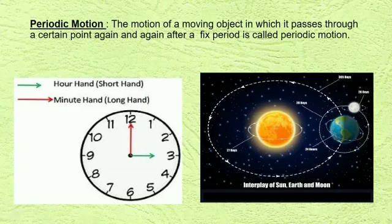Periodic motion: we know that the second hand of a clock completes one round in exactly 60 seconds every time. Such a motion is periodic motion. So, the motion of a moving object in which it passes through a certain point again and again after a fixed period is called periodic motion. For example, the minute hand of a clock.